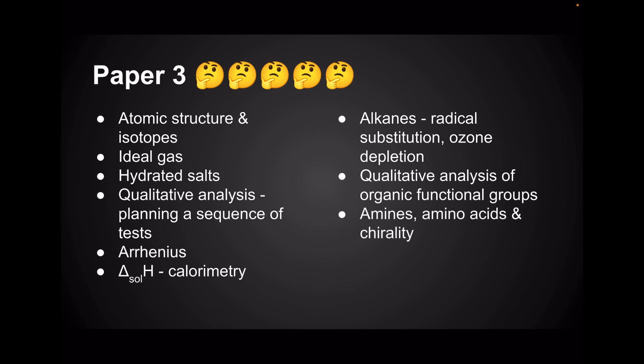Amines, amino acids and chirality. Carboxylic acids and their derivatives, so your acyl chloride, your acid anhydrides, your esters. Chromatography, so either gas chromatography or thin layer chromatography, or both. And finally, there's got to be an unfamiliar mechanism on paper 3 as well.